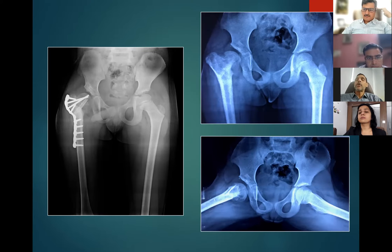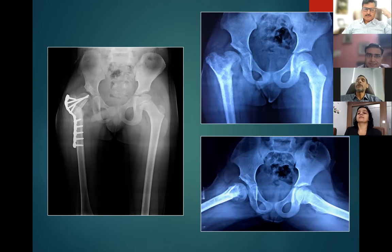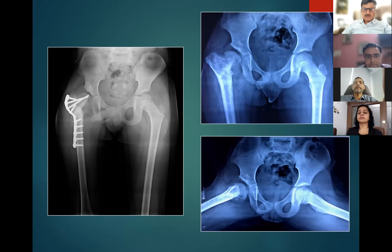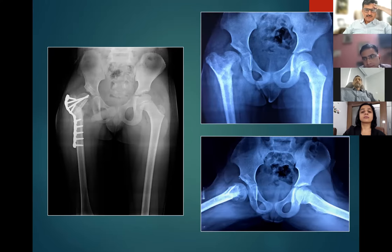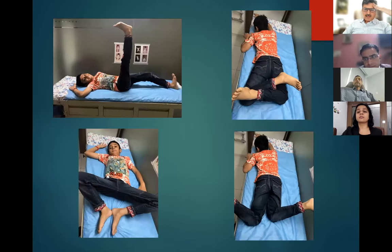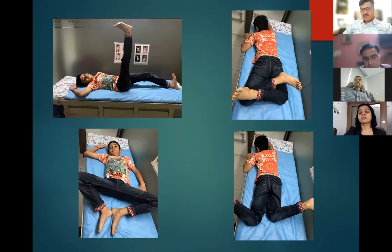Clinical outcome was good at one to two year follow-up — the limp was gone and the child was happy. However, it was anticipated that the adolescent child could return with further problems. Updated follow-up X-rays and videos will be shared at a future meeting.